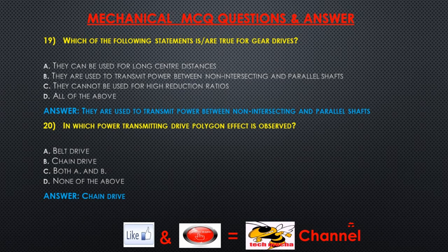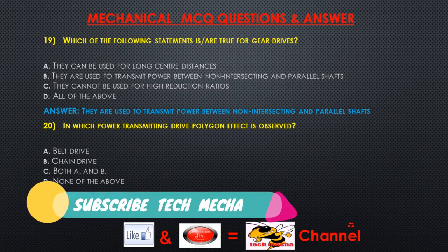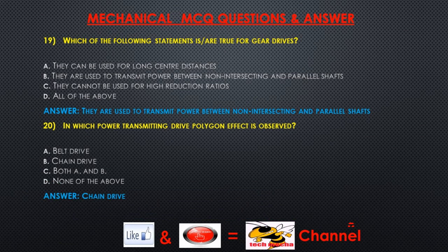Question 19: Which of the following statements is/are true for gear drives? A) they can be used for long center distances, B) they are used to transmit power between non-intersecting and parallel shafts, C) they cannot be used for high reduction ratios, D) all of the above. Answer: They are used to transmit power between non-intersecting and parallel shafts. Question 20: In which power transmitting drive is the polygon effect observed? A) belt drive, B) chain drive, C) both A and B, D) none of the above. Answer: Chain drive.